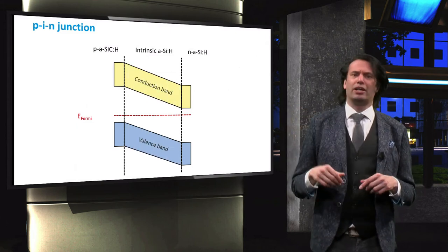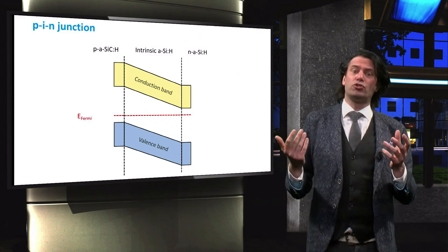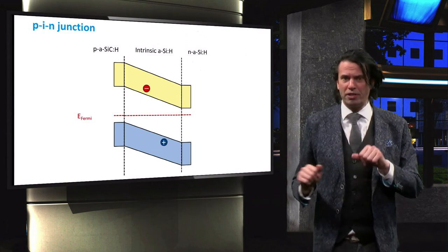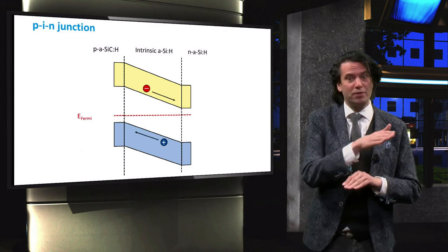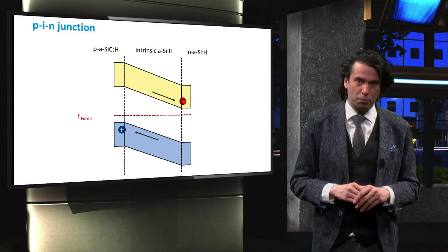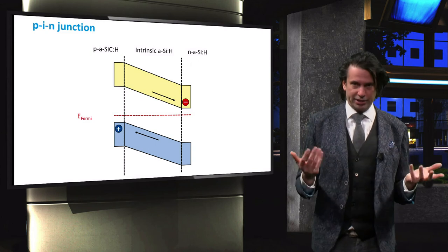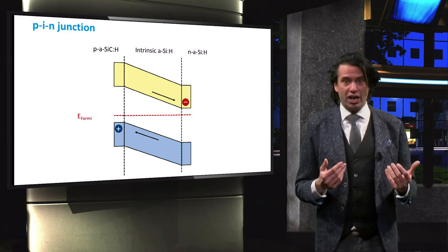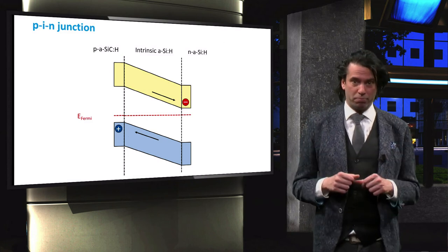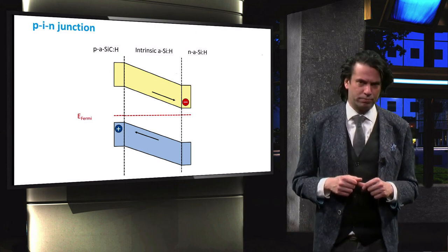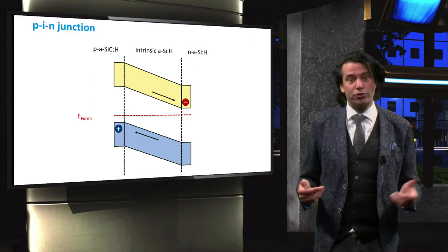Due to the electric field, light-excited electrons will move down the slope in the conduction band towards the n-doped layer, and the holes will move up the slope in the valence band towards the p-doped layer. Inside the p-doped layer, on the other hand, the holes are the majority charge carriers, and the dominant transport mechanism is again diffusion. The same goes for electrons in the n-doped layer.